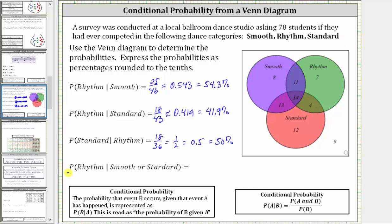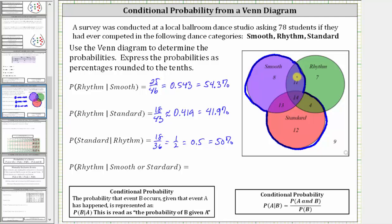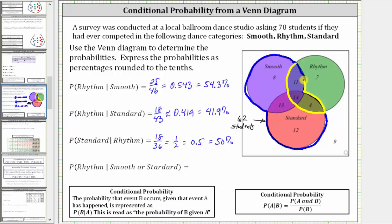For the last question, we're asked to find the probability a student competed in rhythm given they competed in smooth or standard. So we're only concerned about the students in the union of the smooth and standard sets, which are in this set here. There are 8 plus 11 plus 14 plus 13 plus 4 plus 12 students in this set, which equals 62 students. We need to find the subset that also competed in rhythm — 11 plus 14 plus 4 is equal to 29, so there are 29 students in this subset.